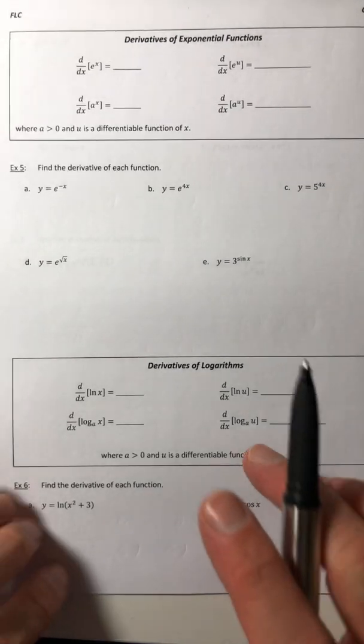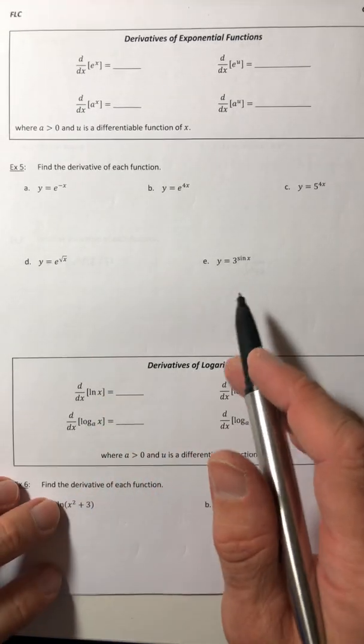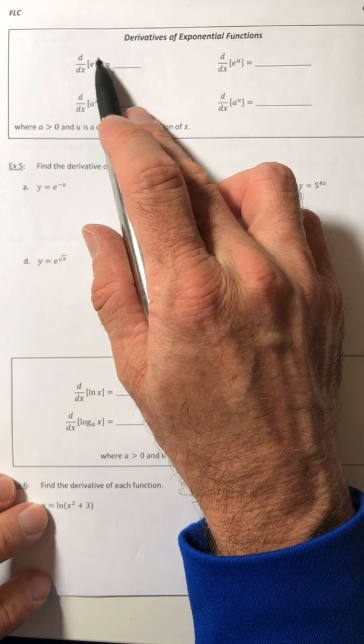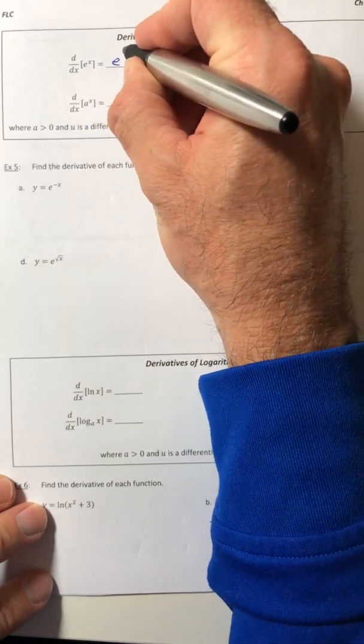Alright, let's look at the derivatives of other types of functions and how the chain rule applies with them. So let's start with exponential functions. e to the x, the derivative of that is e to the x.